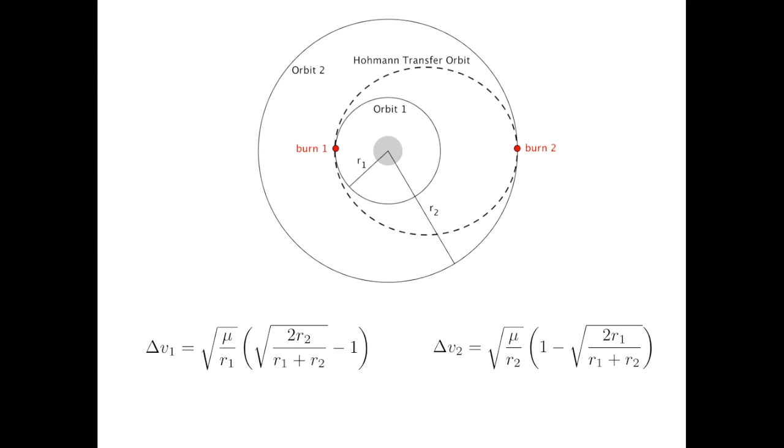The second formula would be used to calculate the delta-v for burn 2, which would be the first burn that you would perform. And the first formula would be used for burn 1, now the second burn to perform. So when you see the delta-v 1, don't think of it as the formula for calculating the delta-v of the first burn you would perform. Rather, it is the formula for calculating the burn at position 1, which is the burn at the lower altitude.